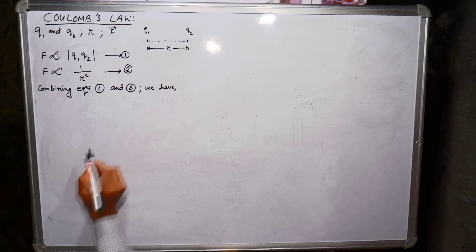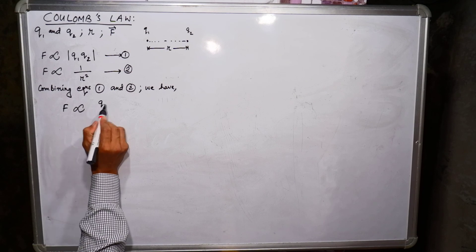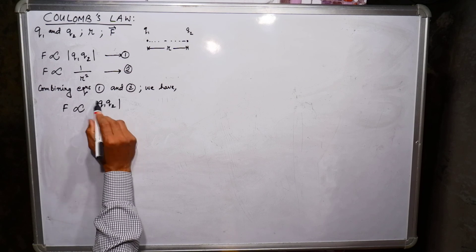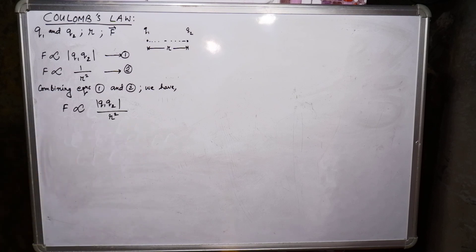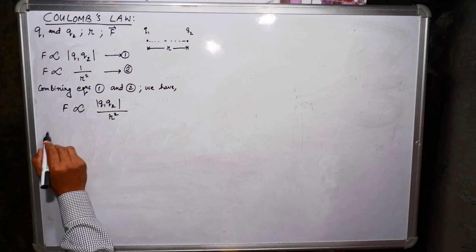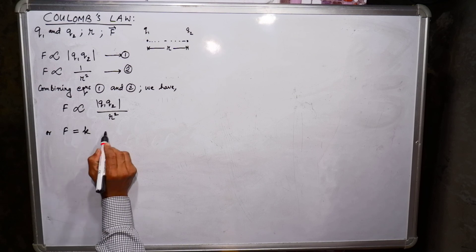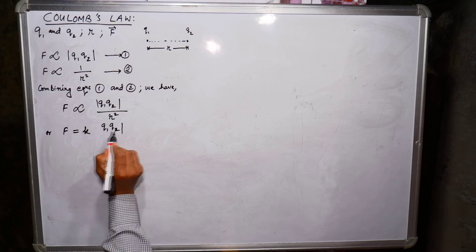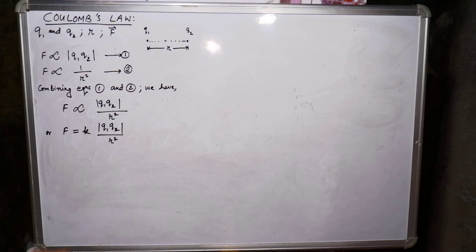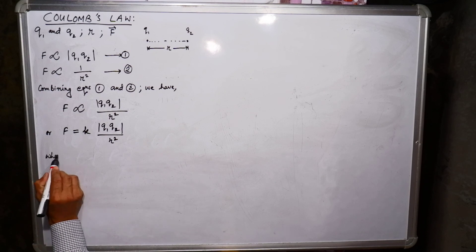Combining equation one and two, we have F is proportional to q1 times q2 (magnitude only) divided by R square. Changing the proportionality sign to an equal sign, we introduce a constant k, giving F = k · q1·q2 / R², where k is a constant.